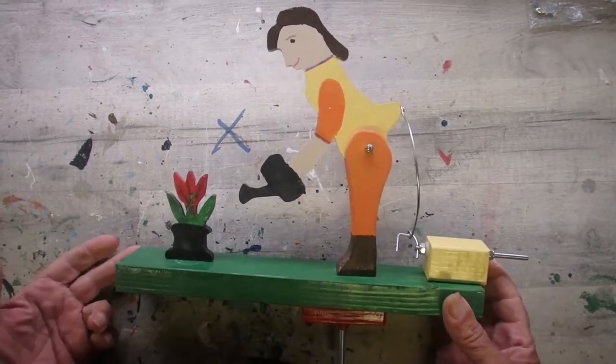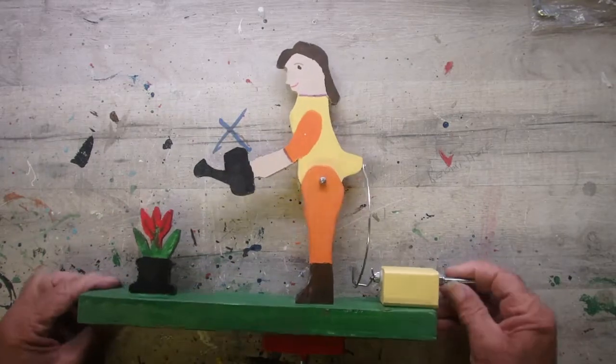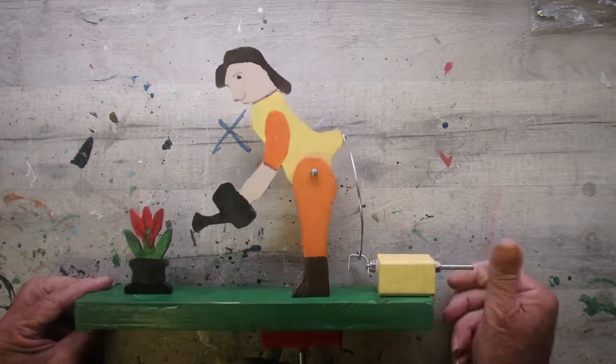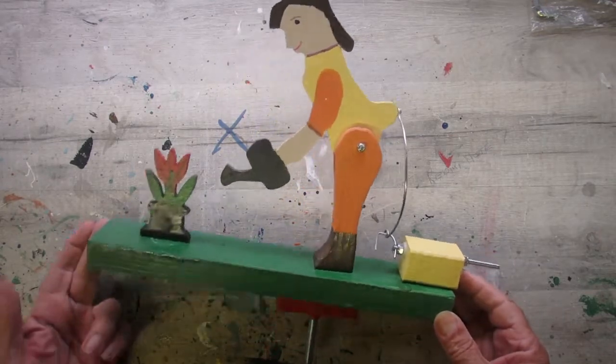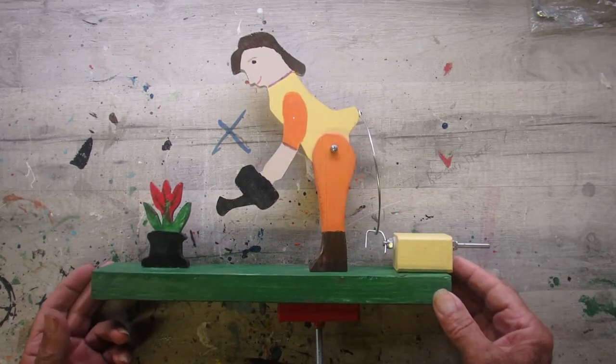Right, welcome. Today what I'm going to show you is Doris, Doris the Flower Lady. As you can see she's a homemade whirlygig made by me. I go under the name of Mr. Whirlygig just to be different I suppose. It's not my real name obviously.